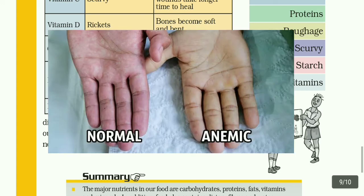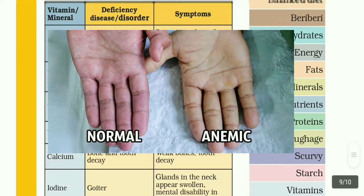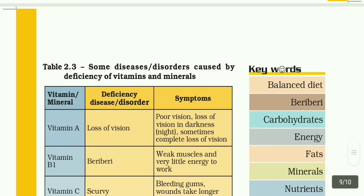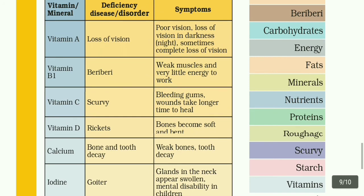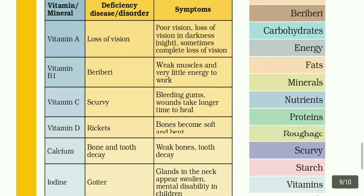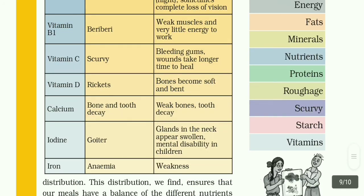Key words: balanced diet, carbohydrates, energy, fats, minerals, nutrients, proteins, roughage, scurvy, starch, vitamins.